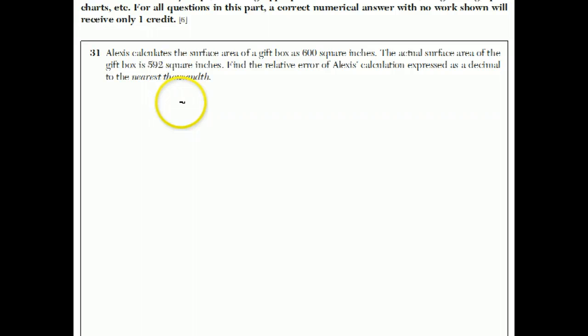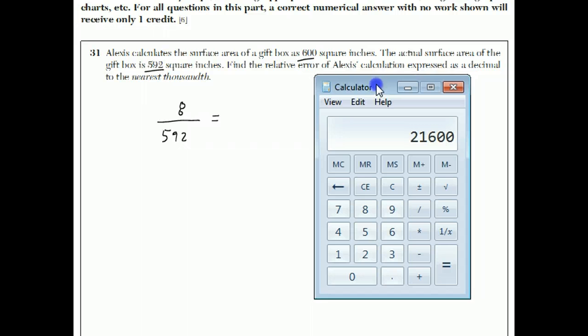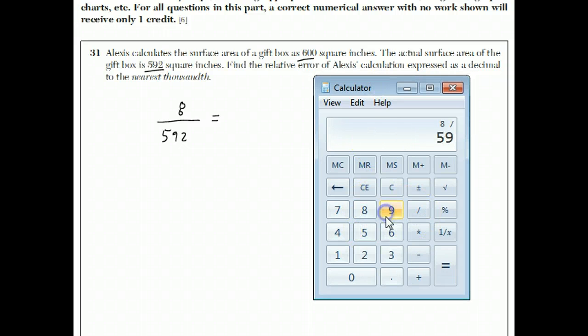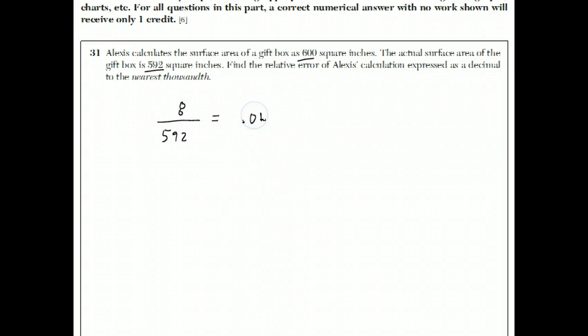So what we do is, if 8 is the amount that we're off by, because 600 minus 592 is 8. But on the bottom of the fraction, we're going to put the actual amount. Now, on your calculator, you can calculate this out. 8 over 592. 8 over 592, which is rounded 0.0135, rounds to 0.014.